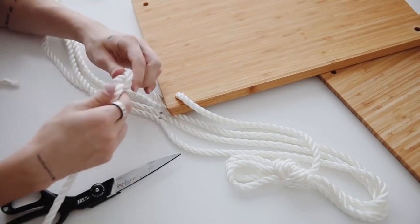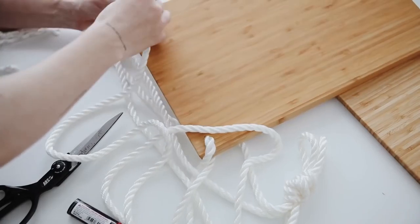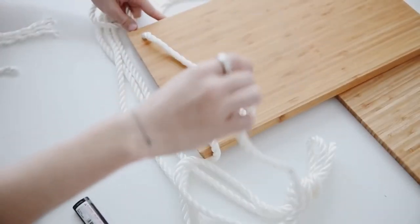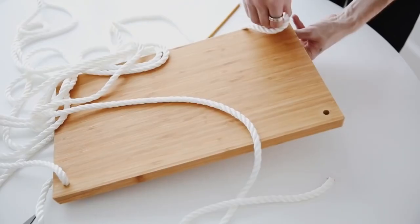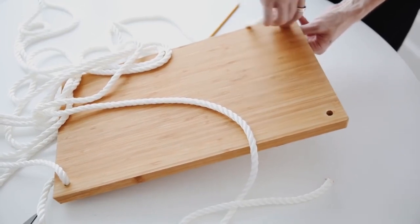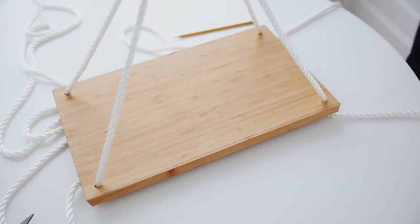Now the knot is what's going to be holding our shelf in place, so you're going to want to make sure that all of your knots are in a very similar spot. That way your shelf is very level and it's not off center. Because if you have knots that are hanging lower on one side, your shelf is then going to hang lower on one side as well.